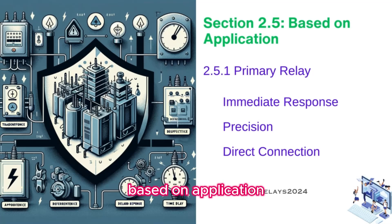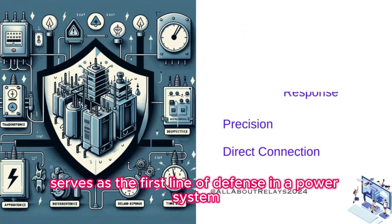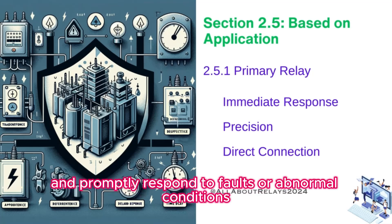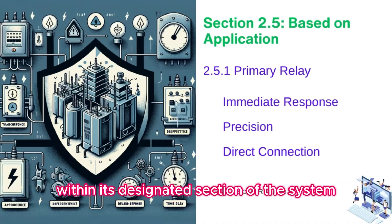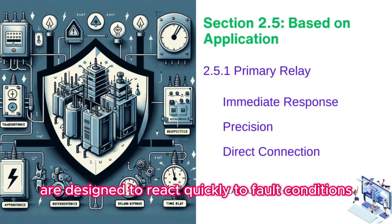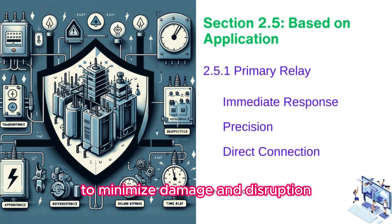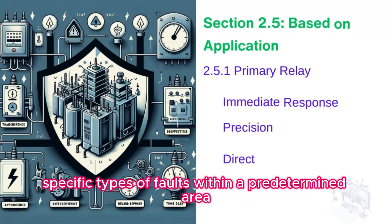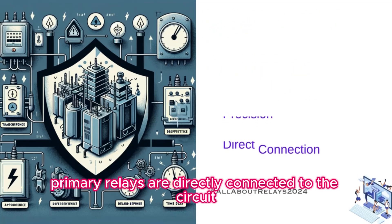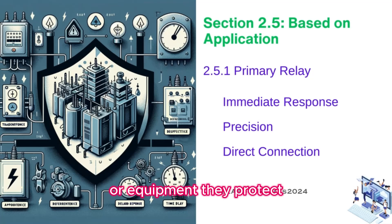Protective relay types based on application. The primary relay, often referred to as the main relay, serves as the first line of defense in a power system protection scheme. Its principal function is to detect and promptly respond to faults or abnormal conditions within its designated section. Primary relays are designed to react quickly to fault conditions to minimize damage and disruption. They are calibrated to detect specific types of faults within a predetermined area, and are typically directly connected to the circuit or equipment they protect, such as transformers, feeders, or generators.